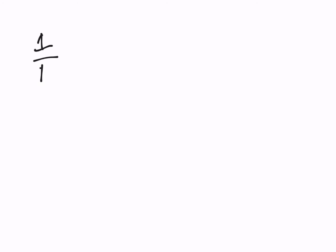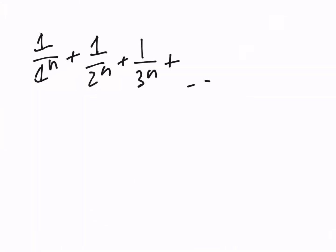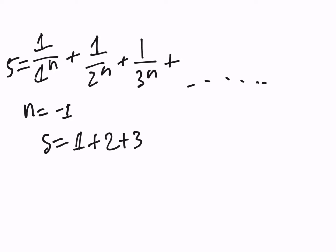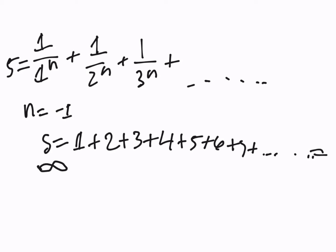The main interesting thing about that equation — 1/1^n plus 1/2^n and so on — is that if we set n equal to negative 1, we get the equation S equals 1 plus 2 plus 3 plus 4 plus 5 plus 6 plus 7, all the way on to infinity. Most people would say this should equal infinity. Well, that's not the case. The real answer is something that will blow your mind.